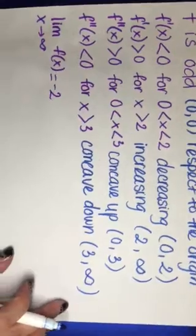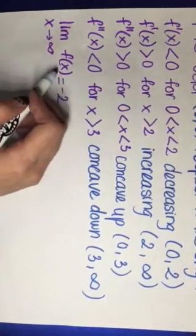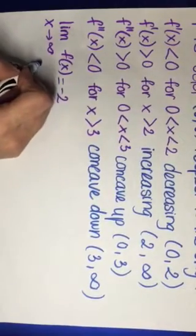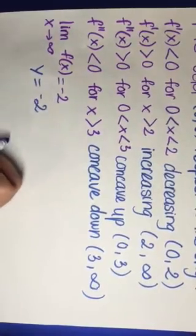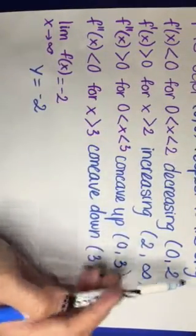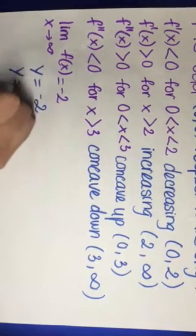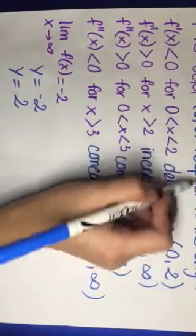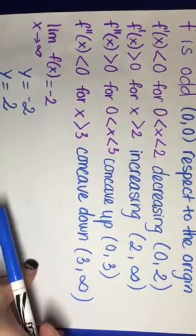We also have the limit as X approaches positive infinity of f(x) equal to minus two. This means we have a horizontal asymptote at y = -2. Since F is odd and symmetric about the origin, we also have a horizontal asymptote at y = 2.